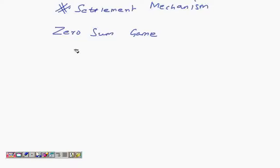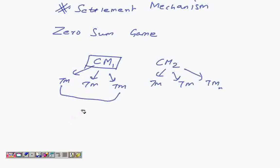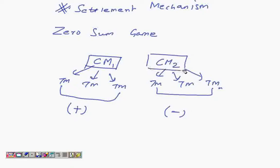A settlement mechanism would mean a mechanism whereby the profits of one clearing member are being achieved and the clearing member who is in losses is actually paying to the person who is in profits. So, if CM1 and CM2 are the two clearing members, after netting up the positions of all the trading members, if CM1 is in profits, then CM2 would be in losses, and the settlement mechanism means CM2 pays to CM1. In simplest terms, that is what settlement mechanism looks like.